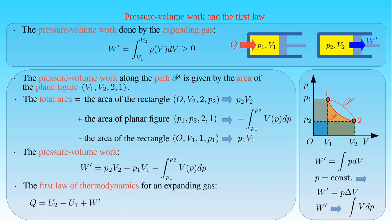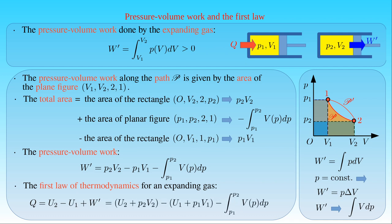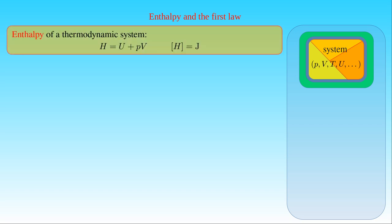The first law states that the heat Q absorbed by the gas is equal to the change U2 minus U1 in the internal energy of the gas, plus the work W' done by the gas. Then we can write that the heat Q is equal to the quantity U2 plus P2 times V2, minus the quantity U1 plus P1 times V1, minus the integral of the volume V of the gas with respect to the pressure P from P1 to P2. By applying the equation obtained for the first law, we can introduce a new thermodynamic quantity called enthalpy. If a thermodynamic system is in a given state described by the state variables pressure P, volume V, temperature T and so on, then the enthalpy H of a substance in the system is defined by the internal energy U of the substance, plus the product of the pressure P and the volume V of the substance. We can see from its definition that enthalpy has the unit of energy, and its SI unit is Joule.